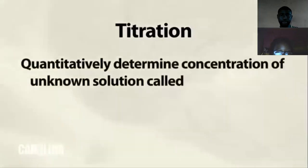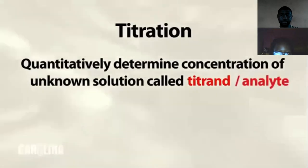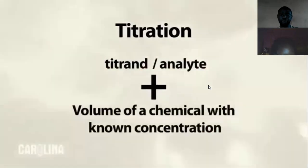I'm Jared Hyman, an assistant professor of chemistry at Elon University. Today we will be discussing the proper titration technique using the complete single burette assembly kit. The purpose of a titration is to quantitatively determine the concentration of an unknown solution — the titrand or analyte — by adding a volume of a chemical with a known concentration called the titrant. To mark the end point, an indicator is added to the analyte.